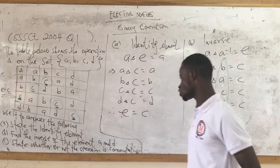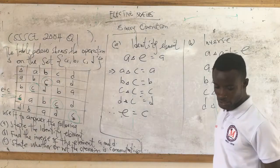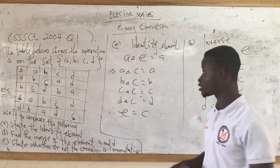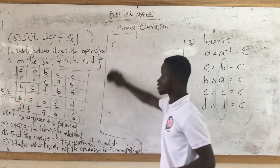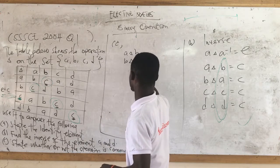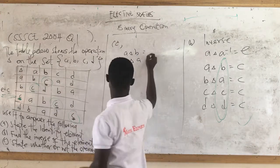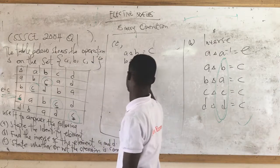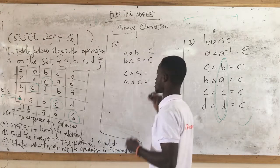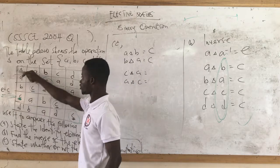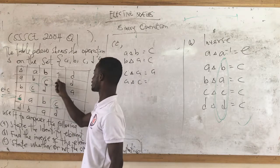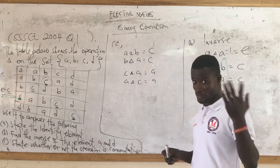Next question: state whether or not the operation is commutative. As we did in the previous video, pick any two elements, swap them, and see if you get the same result. Let's pick A delta B and B delta A. A delta B = C, and B delta A = C. Then C delta A = A, and A delta C = A. We still need more evidence.